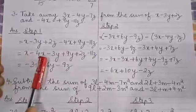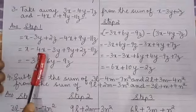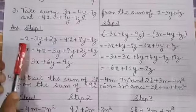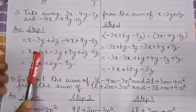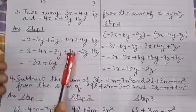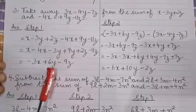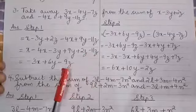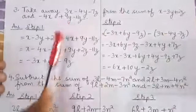x minus 4x means 1x minus 4x. The numerical coefficients are 1 minus 4, which is minus 3. So minus 3x. Then minus 3 plus 9 is plus 6x. For y: plus 2 minus 11 is minus 9y. So this is the sum of these two expressions.